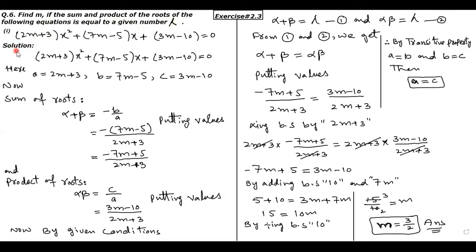Sabse pehle hum sum of roots aur product of roots point karenge. A ki value coefficient of x square hai, B coefficient of x hai, aur C ka value 3m minus 10 hai jo constant term hai. Ab sum of roots ke liye: alpha plus beta is equal to minus B divided by A. B ki value 7m minus 5 hai aur A ki value 2m plus 3 hai.